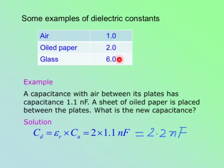Here is a simple example. A capacitance with air between its plates has capacitance of 1.1 nanofarads. Then a sheet of oil paper is put in. What is the new capacitance? Since the dielectric constant for oil paper is 2, the capacitance is doubled. So 1.1 now is 2.2 nanofarads.